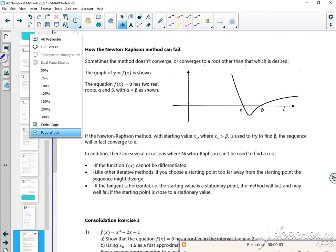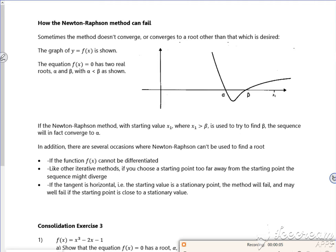Right then, last video for this. It's just seeing where it fails, so think about what it does. It looks at a tangent and how a tangent crosses the x-axis. So it says sometimes it doesn't converge.